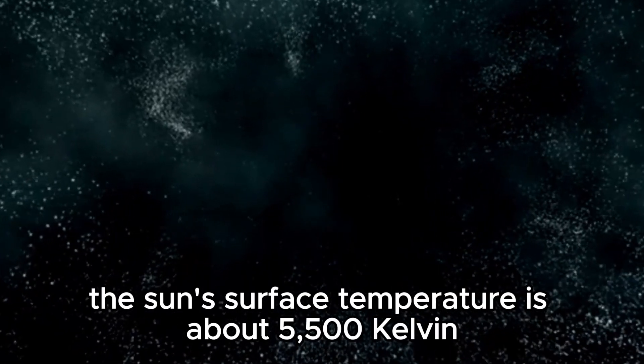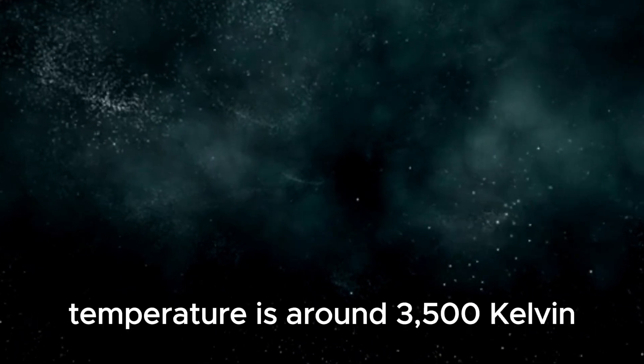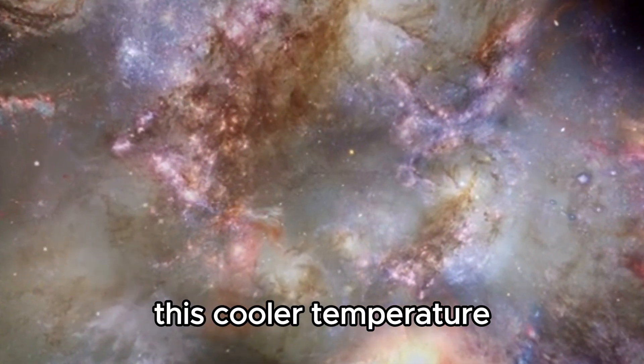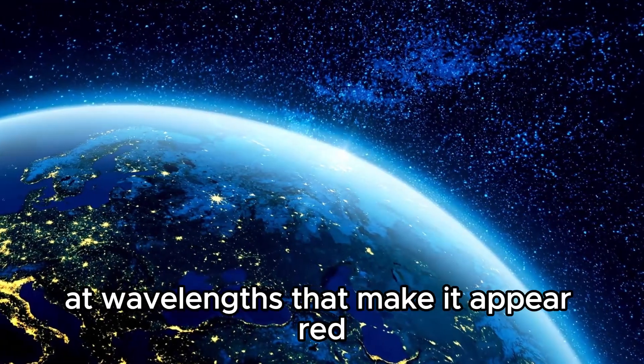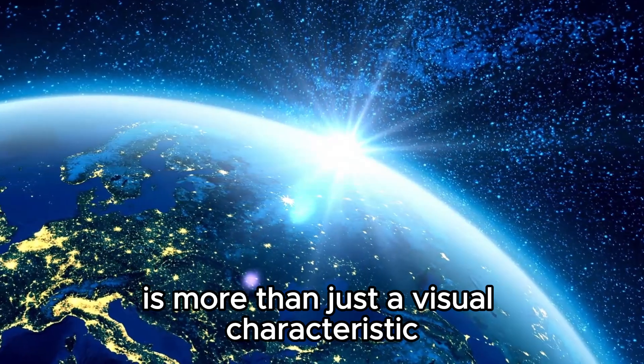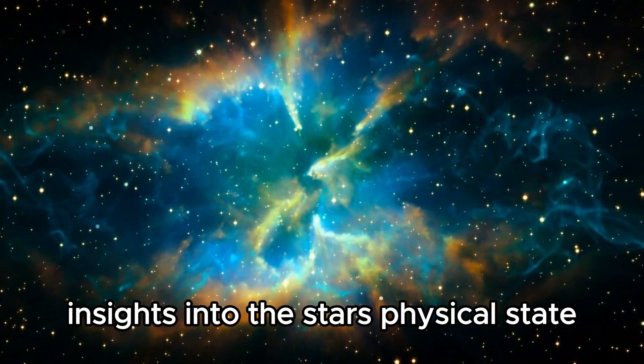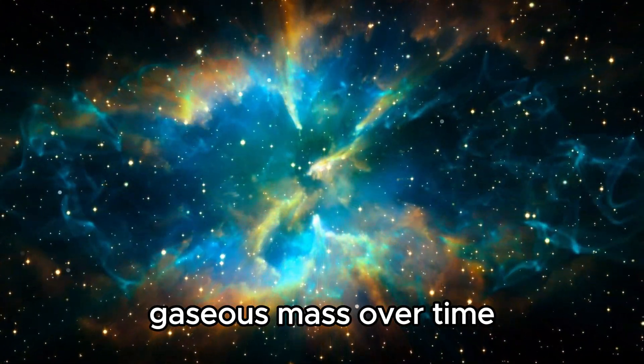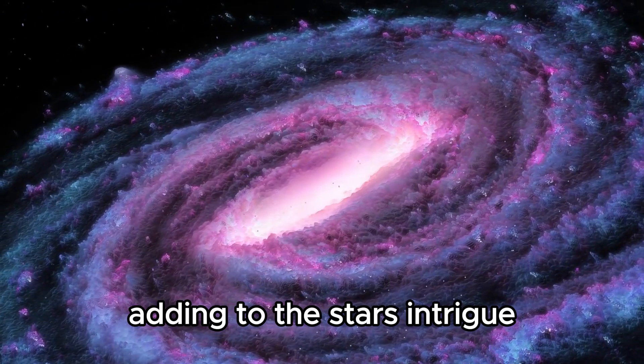For comparison, the Sun's surface temperature is about 5,500 Kelvin, while Betelgeuse's surface temperature is around 3,500 Kelvin. This cooler temperature allows Betelgeuse to emit light at wavelengths that make it appear red. The red color of Betelgeuse is more than just a visual characteristic. It provides valuable insights into the star's physical state and the processes occurring within its vast gaseous mass. Over time, the color of Betelgeuse has shifted, adding to the star's intrigue.